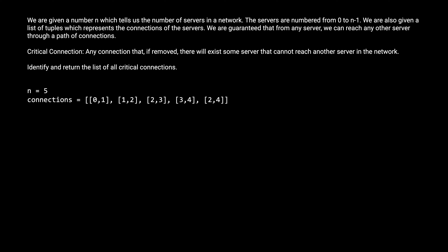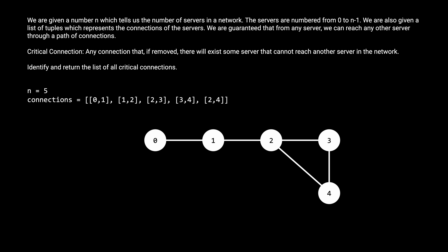For example, if we are given 5 as n and this list is our connections list, then our network graph should look something like this. The servers are represented by vertices and the connections are represented by edges. Notice that for this graph there are two critical connections — I've colored them red. If I remove either of these connections, some servers will become unreachable from other servers. On the other hand, there are three connections that are non-critical. For any of these green connections, if I remove one of them, all these servers can still reach one another.